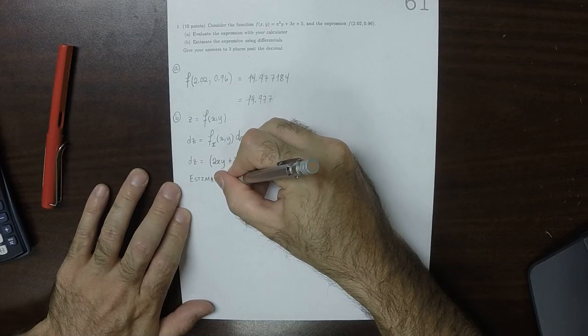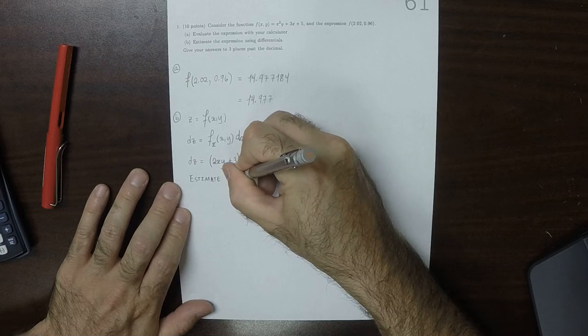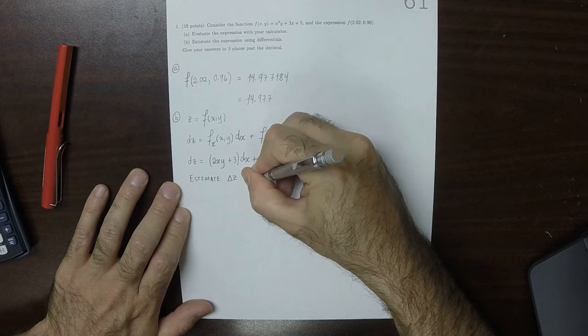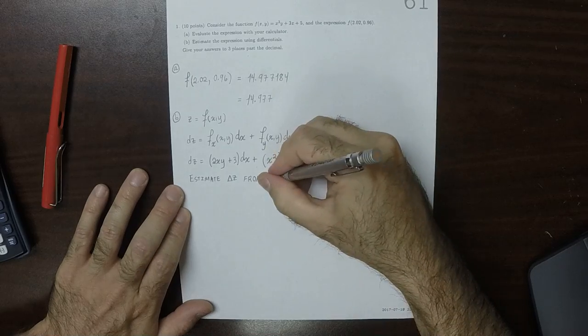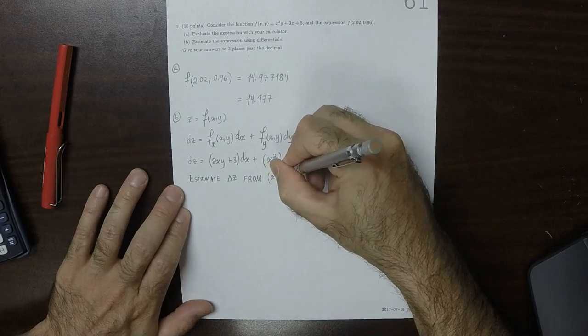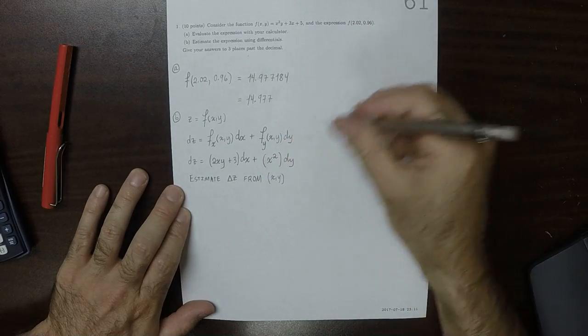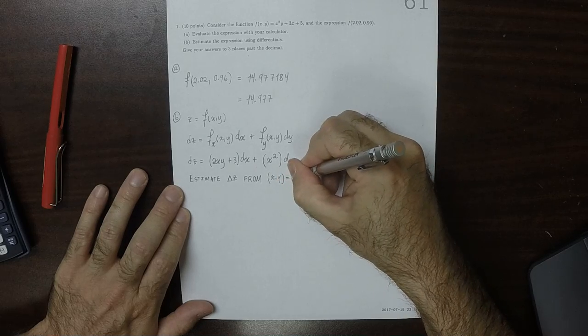We'll estimate delta z from x, y value. The close value, it seems to me, is 2, 1.